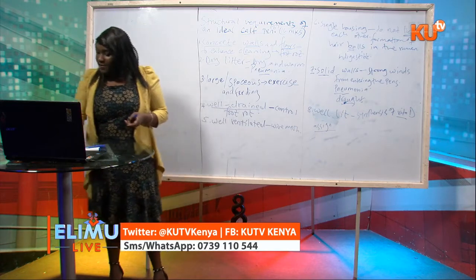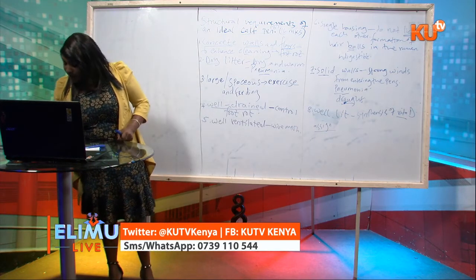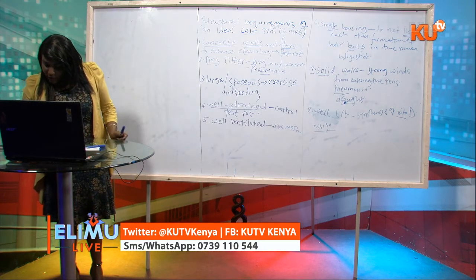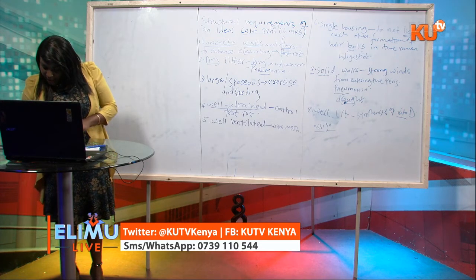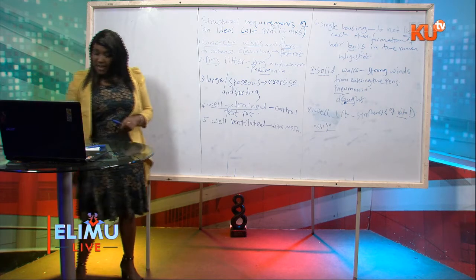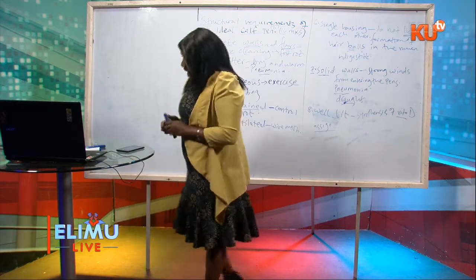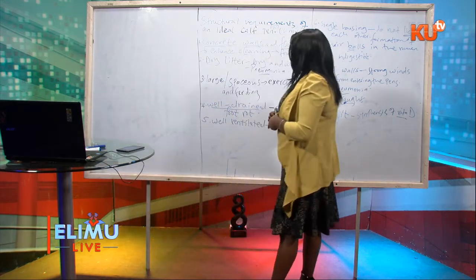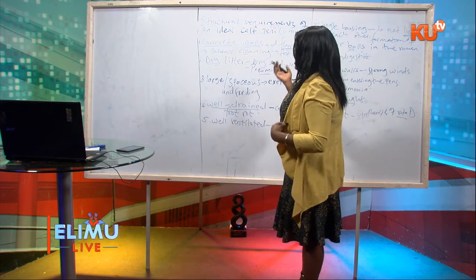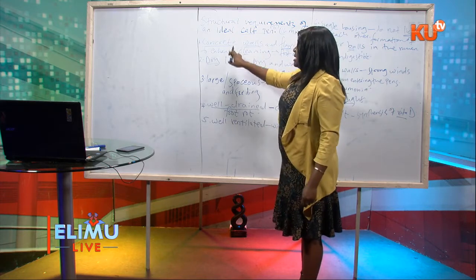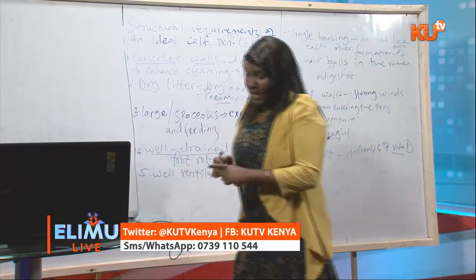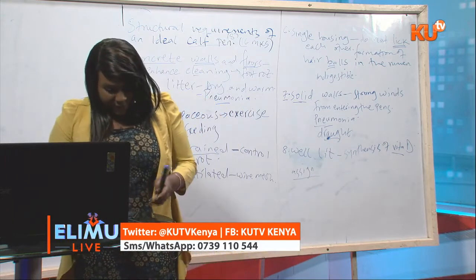Looking at responses: Winnie asks, what are the requirements of a calf pen? We have stated and explained them — the concrete walls and floors, the dry litter — and of course you explain each one. The requirements can be asked in different ways in exam questions, but these are the key points. Thank you for that question, Winnie.